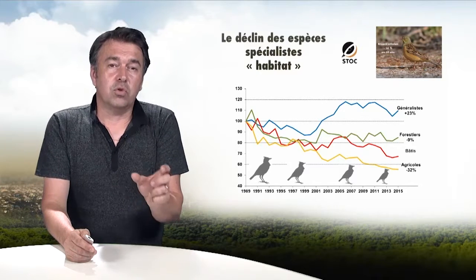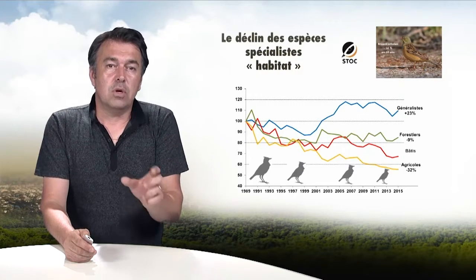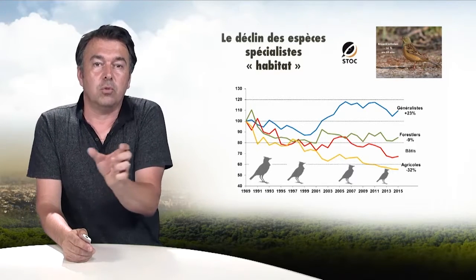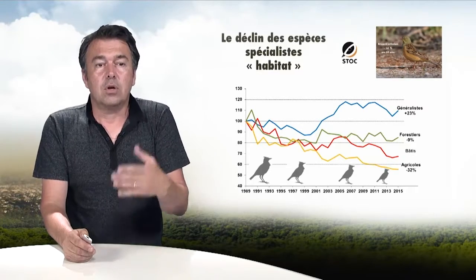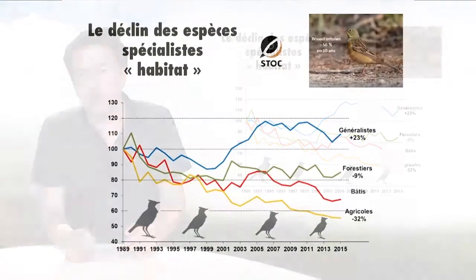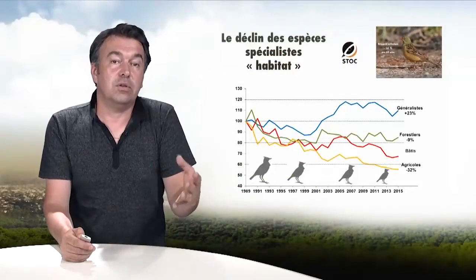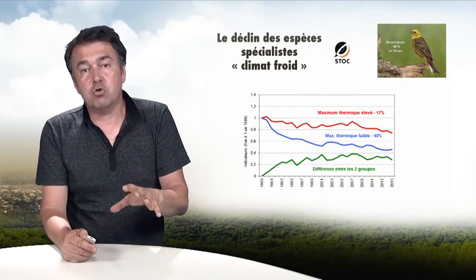Specialist species are much more sensitive to global change and to anthropic pressure, which very quickly means that the conditions in which they live become unsuitable. If we look at bird communities in France, a decline in the abundance of specialist species has been noted in farming environments, forests, and built-up areas. Conversely, generalist species are benefiting from the disappearance of the specialists, and their numbers are now larger.